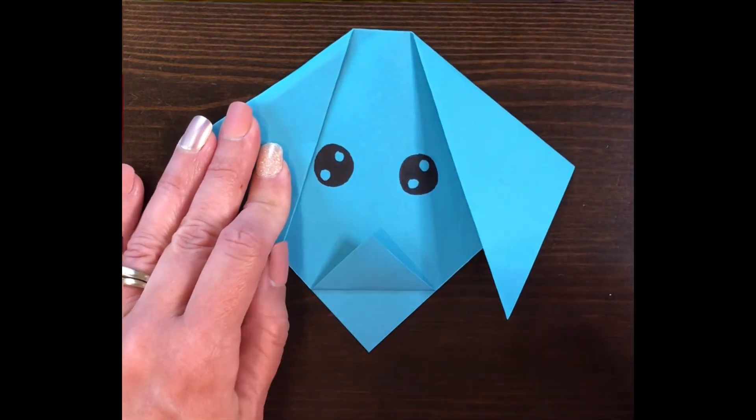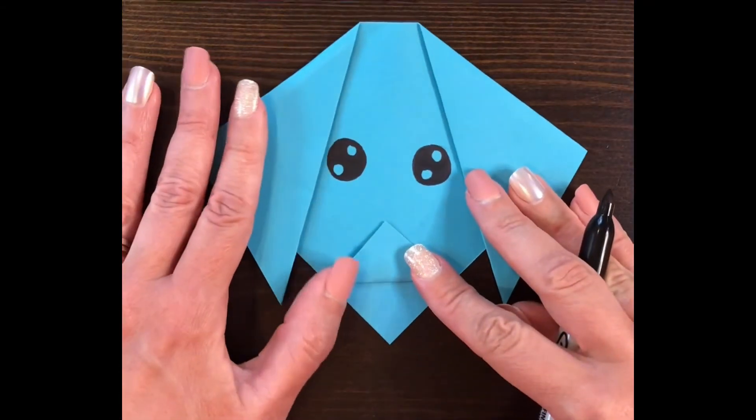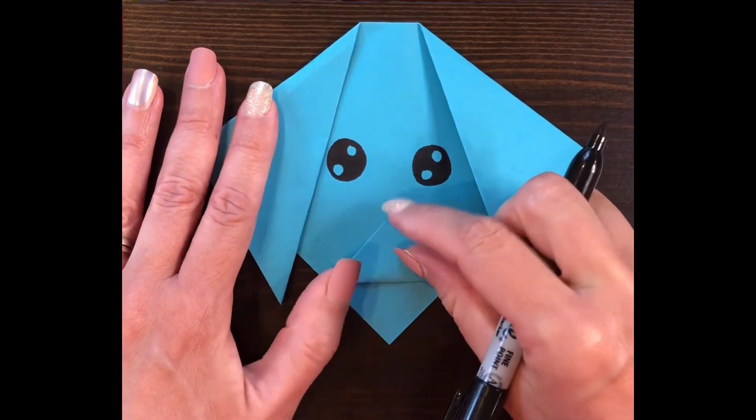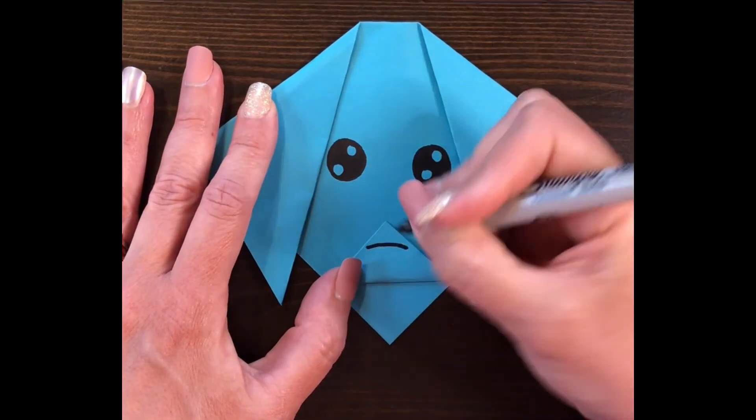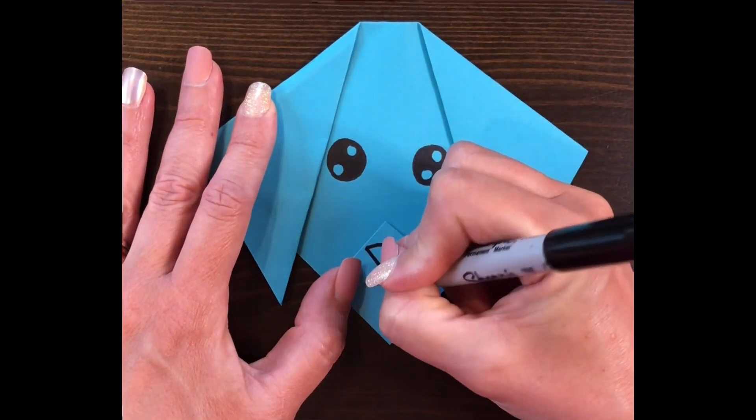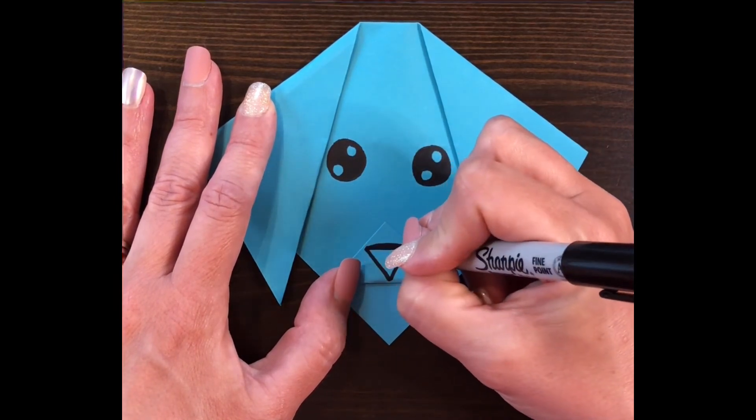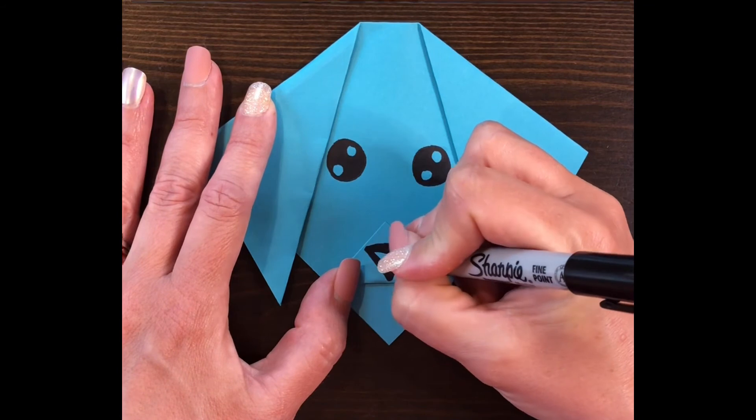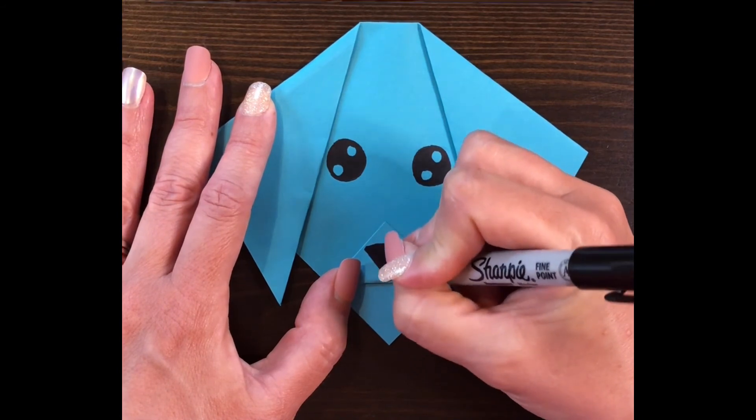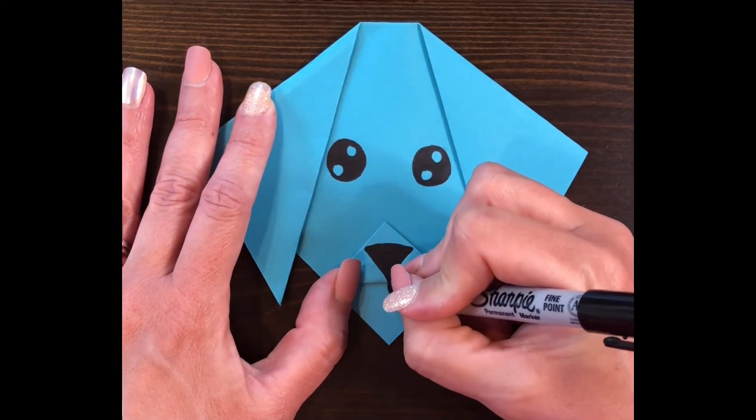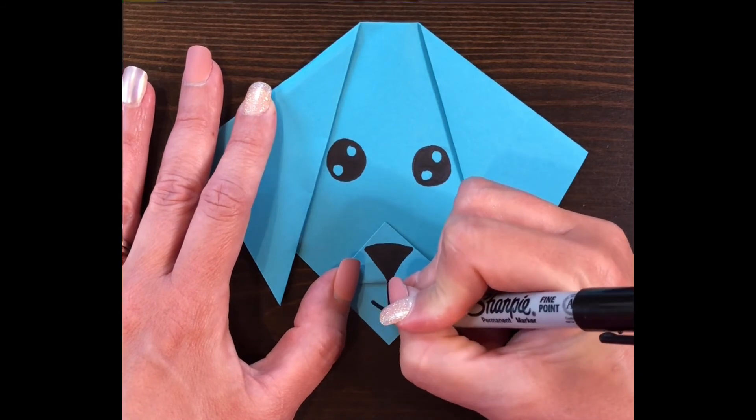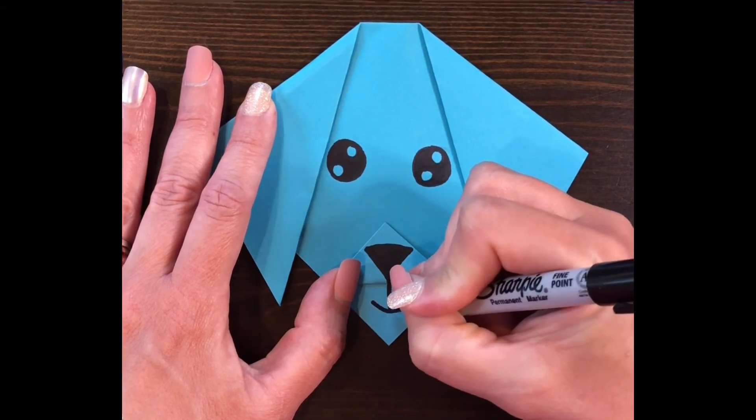Once the eyes are done, then we're going to create a nose on this top triangle here. So think about what shape you might like for the nose. You could make a dog with his little tongue hanging out if you wanted. You could give him whiskers. And you can use this bottom flap, this bottom triangle as well to create the mouth for the dog.